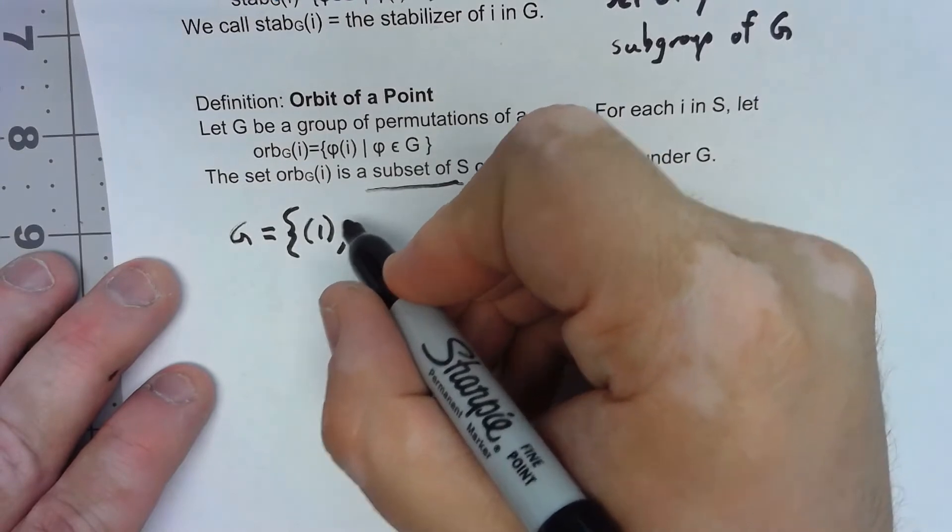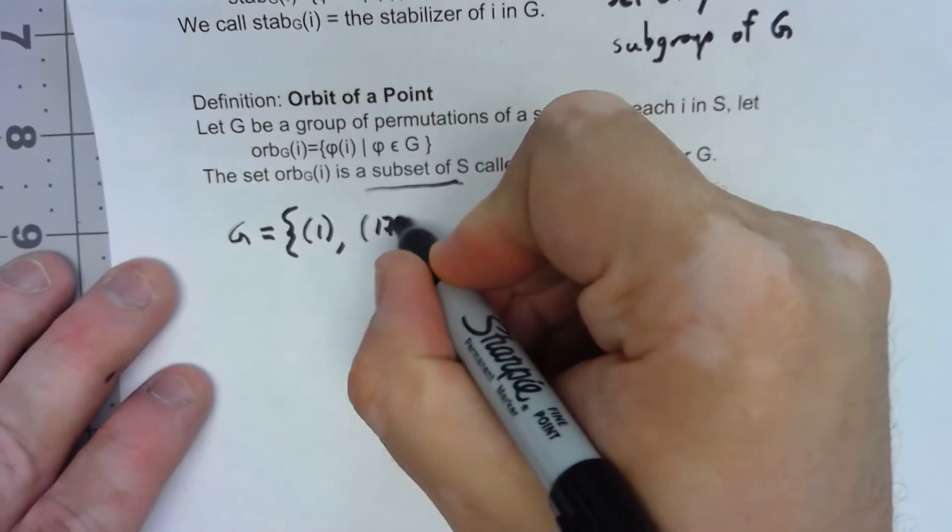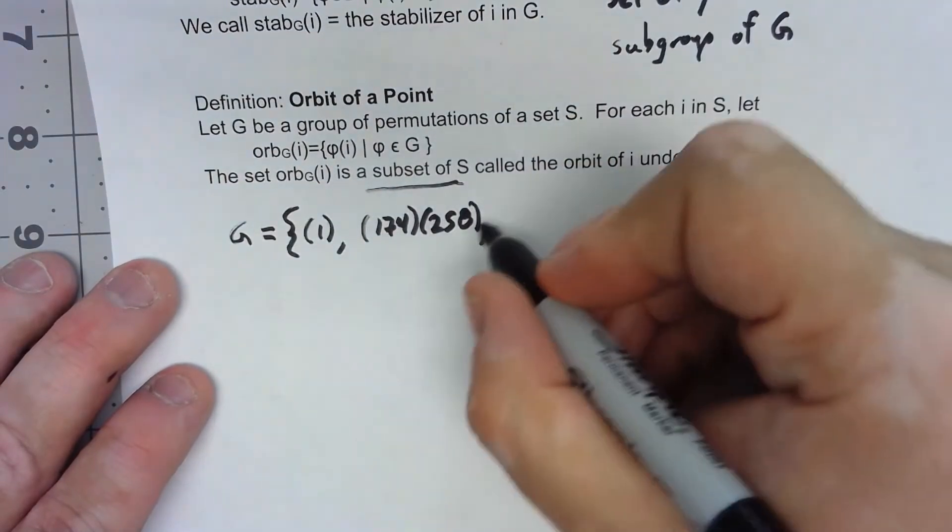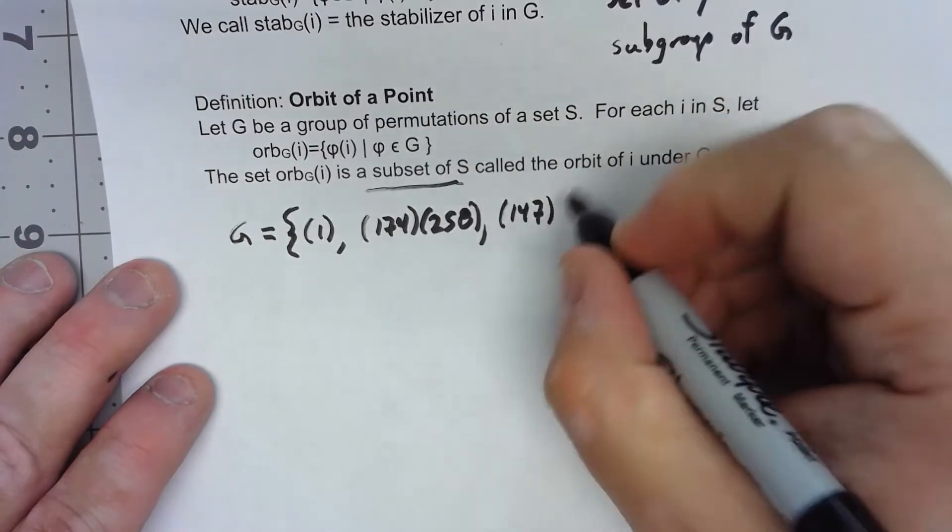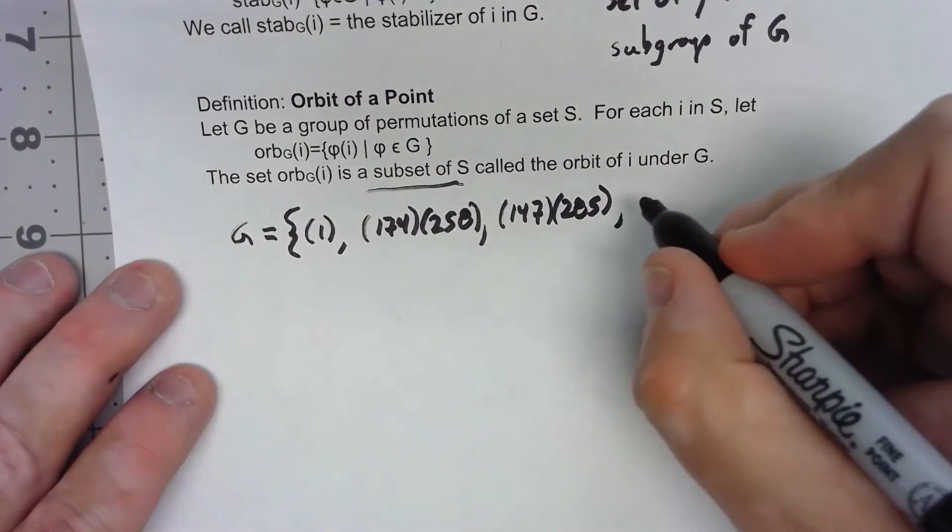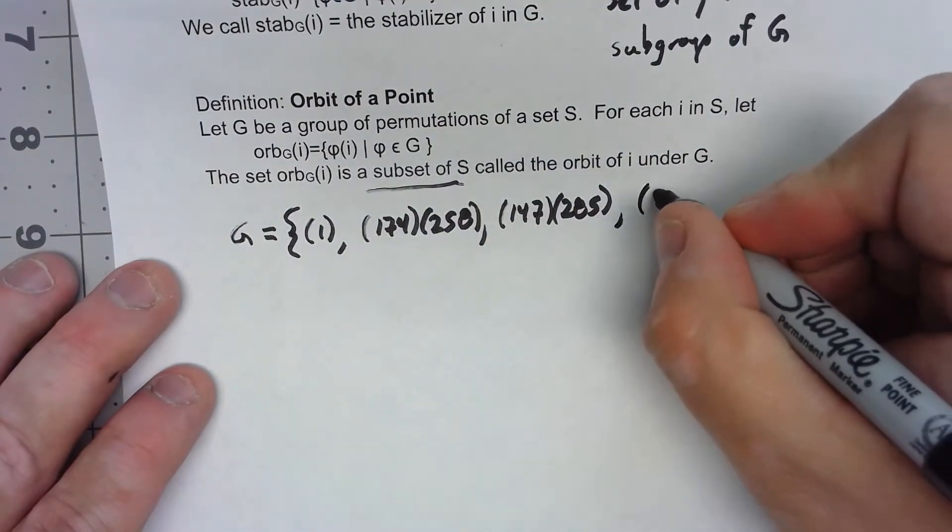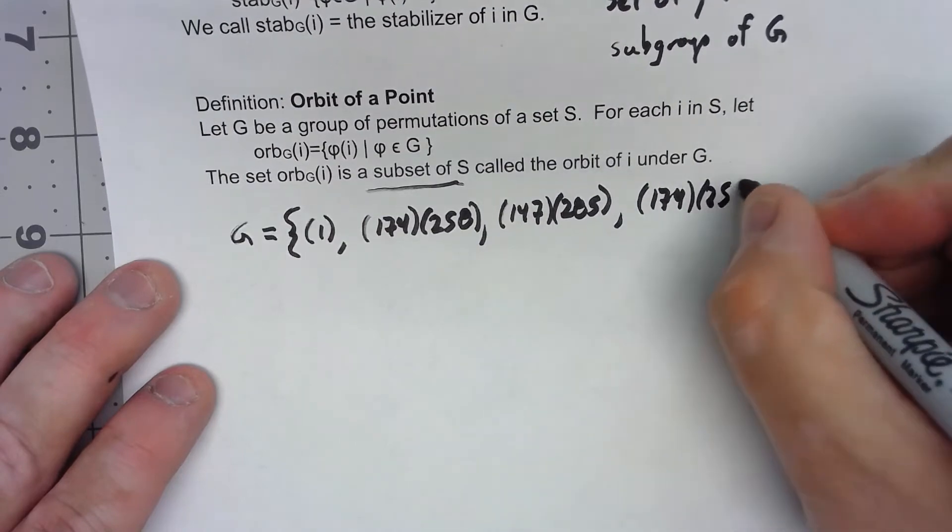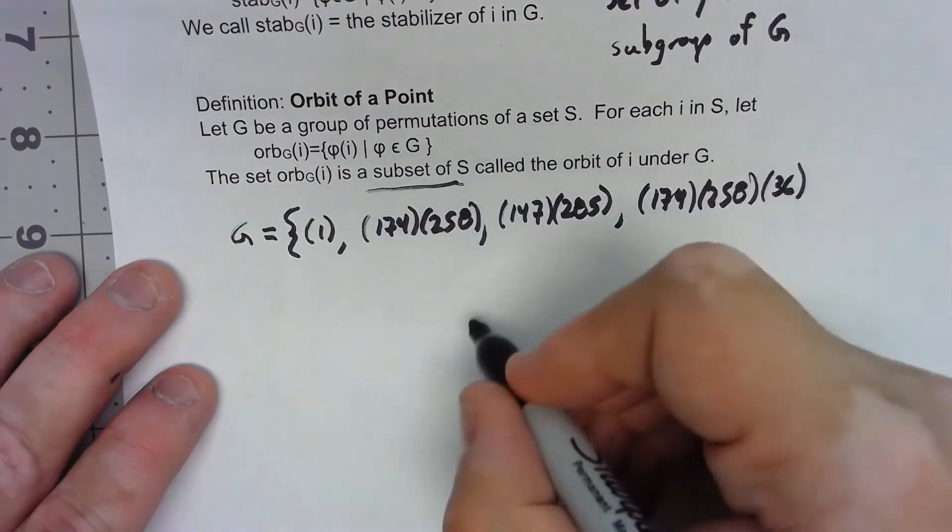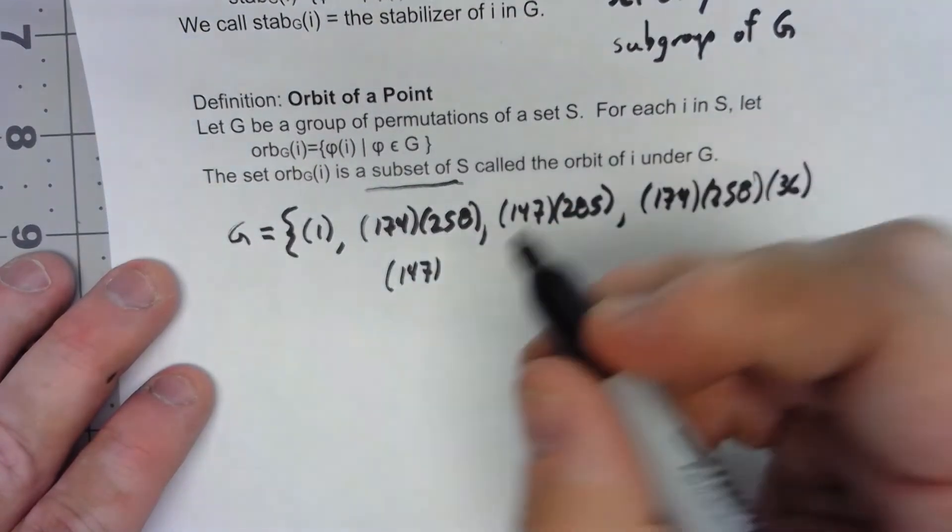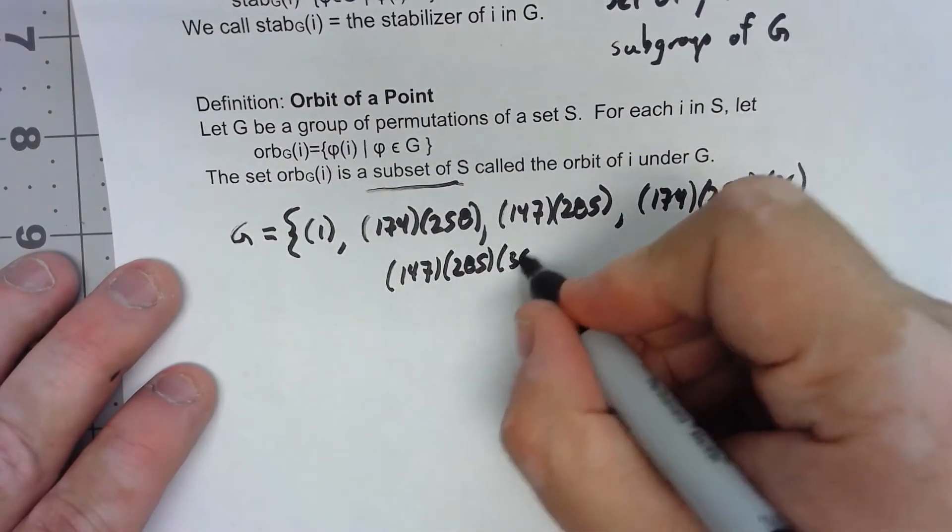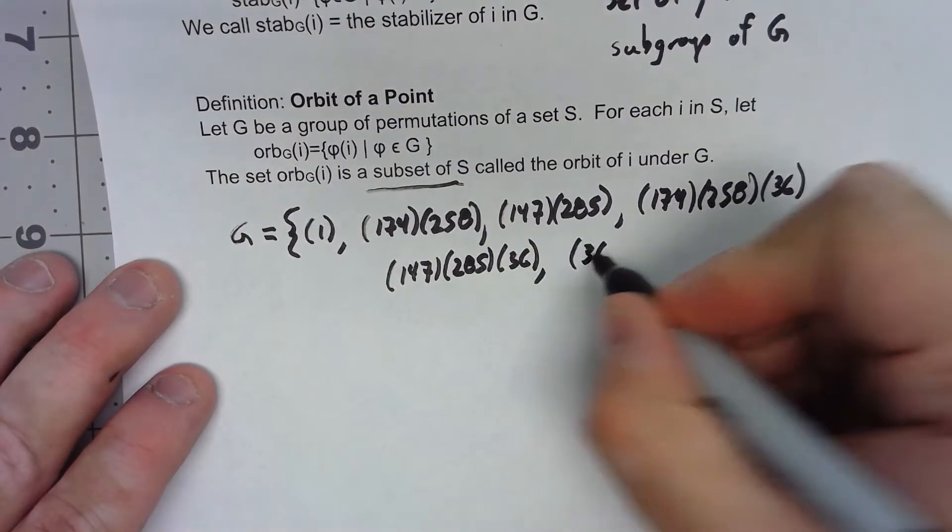Then we're going to put in 174258. We're going to put in 147285. We're going to put in those two things 174258 times 36. We're going to put in 147285 times 36. And then lastly, we're going to put in 36.